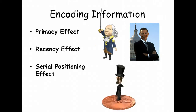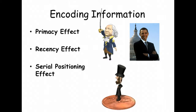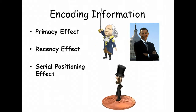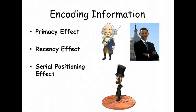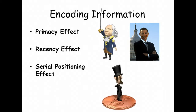Finally, the serial position effect is the tendency to recall information presented first and last, but not so much in the middle. That's why most people can remember George Washington, John Adams, Thomas Jefferson, Barack Obama, Bill Clinton, and George W. Bush, but not people like Chester A. Arthur and Millard Fillmore — well, except for history geeks.